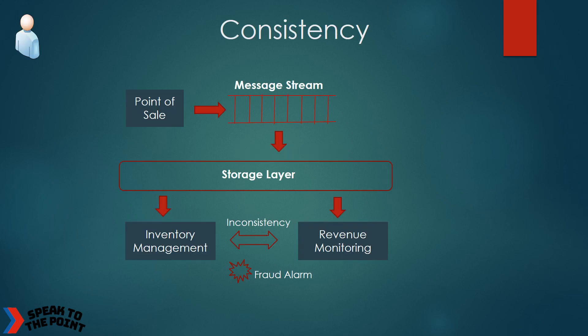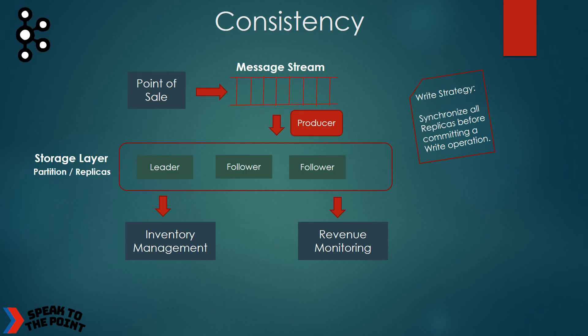In some scenarios, the data read by the downstream applications must be consistent. Any data inconsistency between those applications could lead to wrong results. Our inventory management system and revenue monitoring system are planned to use the data stream coming from the point-of-sale system. If the data is inconsistent between these two applications, that may trigger an unnecessary fraud alarm. Failover incidents may occur at any point of time while writing or reading messages in the storage layer. Any delay in the replication mechanism should not make data inconsistent for the downstream applications. You can implement a write strategy in which the producer waits for all follower replicas of the partition to be synchronized with the leader replica — only then is the message write considered complete. However, this increases the write latency of the upstream applications.